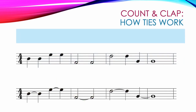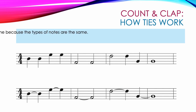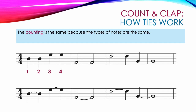Now let's take a closer look at the purpose of ties and how they work. These two examples are exactly the same, except the top example doesn't have any ties and the bottom example does. The counting is the same for both examples because the types of notes are the same. The first measure of the top example has four quarter notes — each one gets its own count: one, two, three, four. The bottom example has the exact same four quarter notes, so it gets the same counting: one, two, three, four.